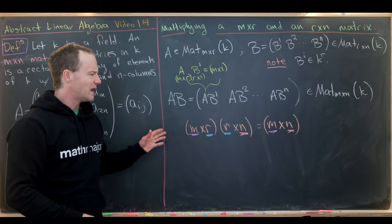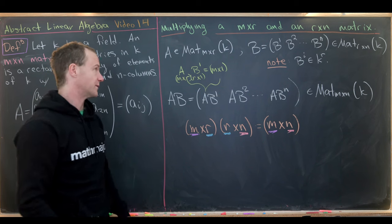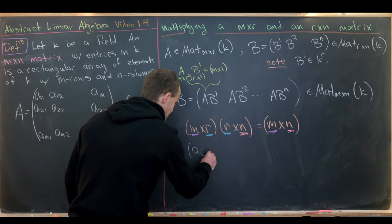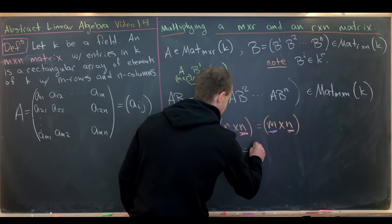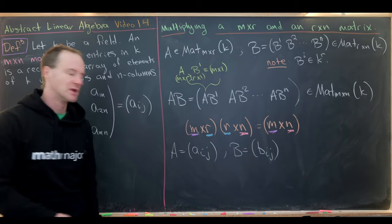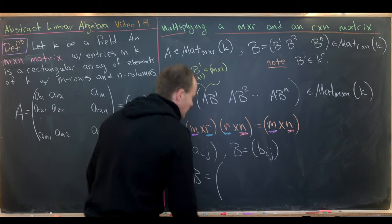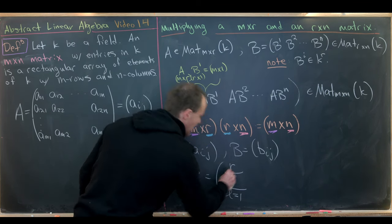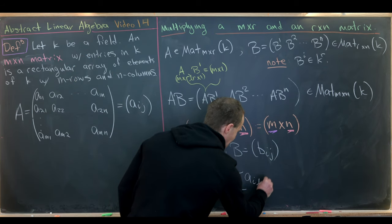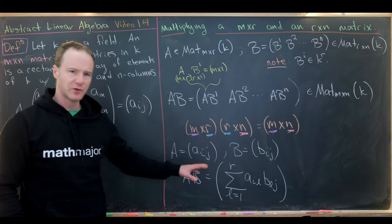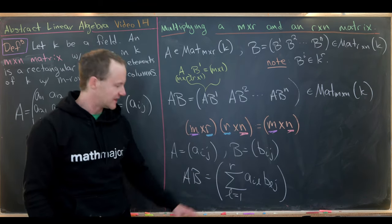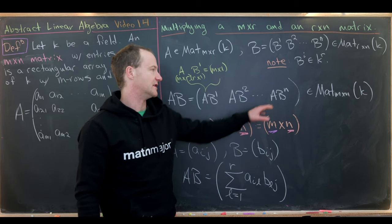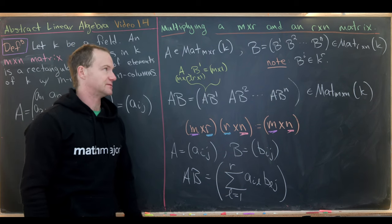Equivalently, we can write an all-in-one entry formula: if A has entries AIJ and B has entries BIJ, then the IJ entry of A times B is the sum over L from 1 to R of A_{IL} · B_{LJ}. That's a sum of products, and it's exactly what you get from the column-based definition of matrix-matrix multiplication.